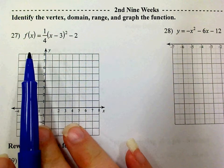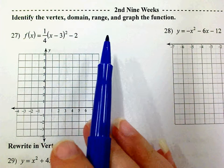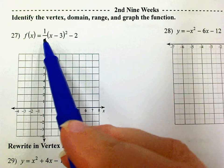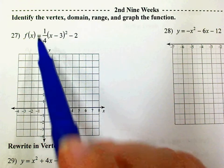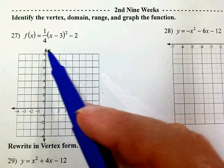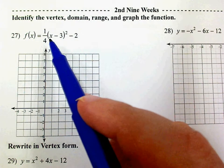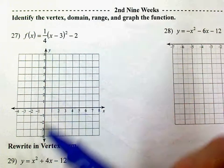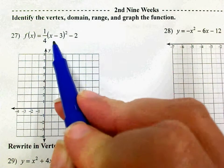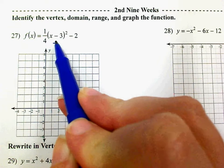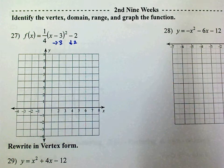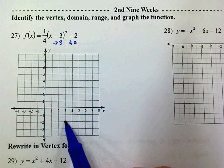Question 27 says identify the vertex, domain, range, and graph the function. If you're in regular, I changed this to a positive 2. If you're on the other side, it's the 1/4. I'm still going to look at this from my vertex. This is negative 3, so go to the right 3. This is negative 2, so go down 2. Go to the right 3 and down 2 — there's my vertex.